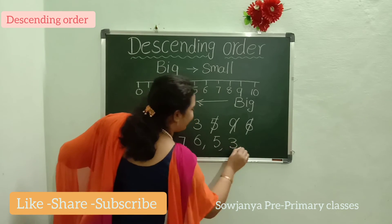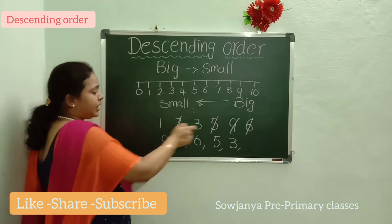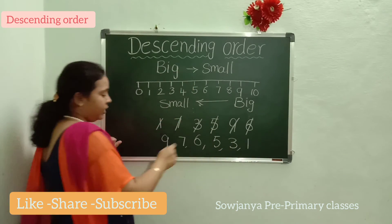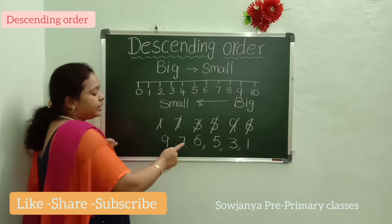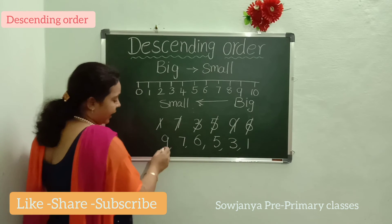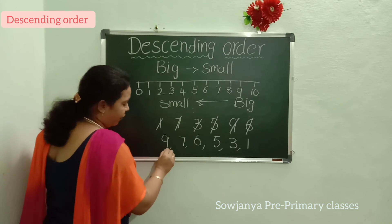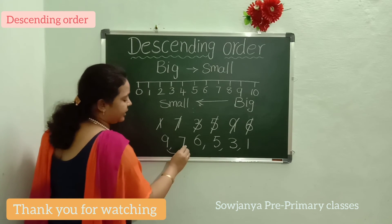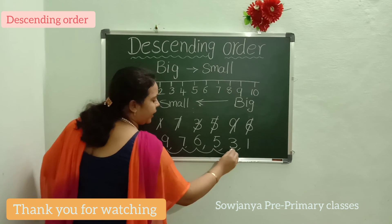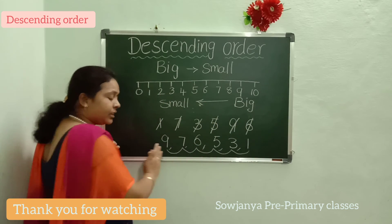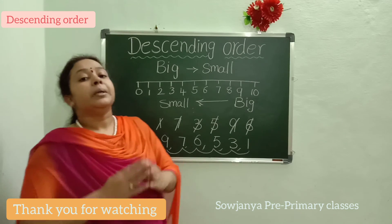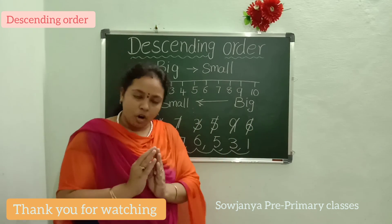Very good! Which number is left for us now? 1. So, 1 is the small number. Now see: 9, 7, 6, 5, 3 and 1. See, 9 is the big number. After 9, which will be the small number? 7. 7, then 6, 5, 3, 1 — like that, it was coming into the small number. Descending Order means Big Number to Small Number. Bye.